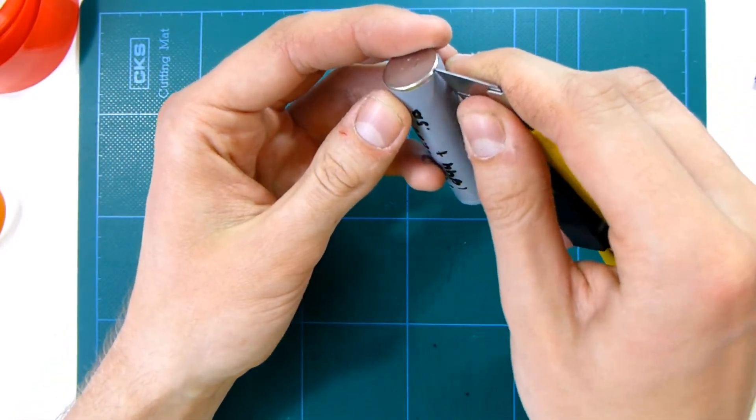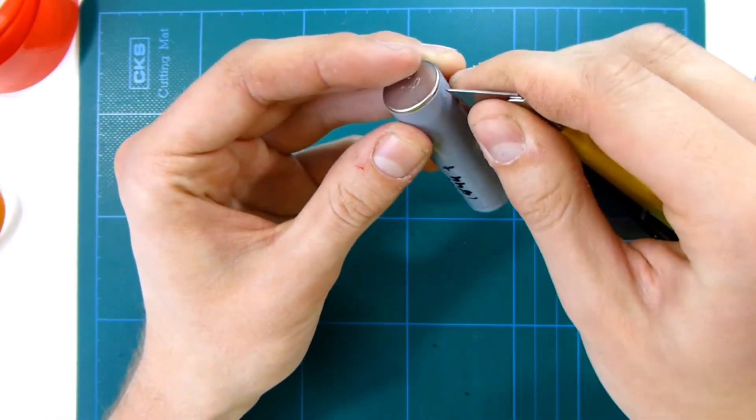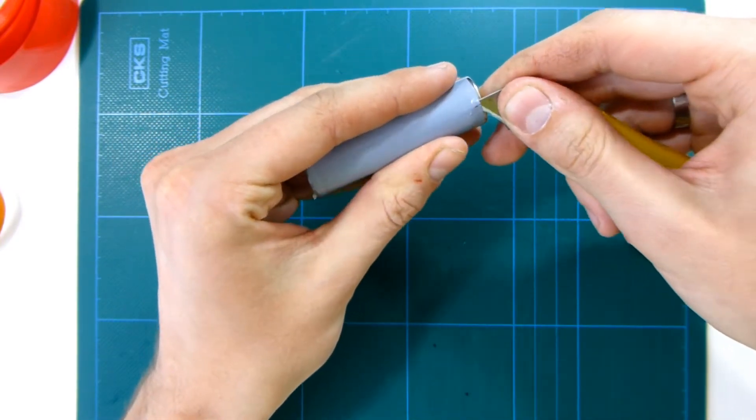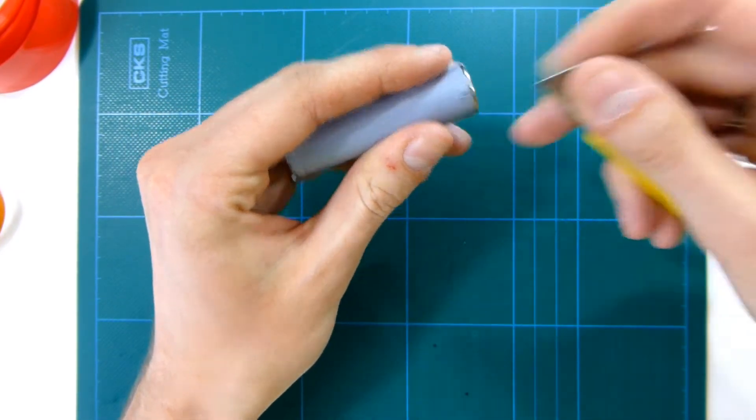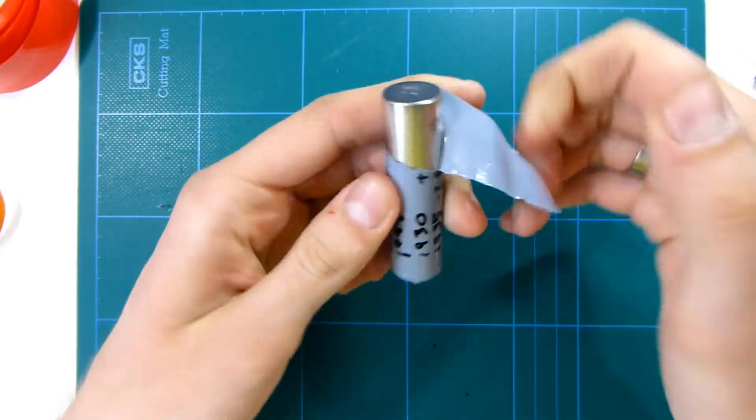Just make a score so you can get your knife or whatever tool in between here. Don't cut too hard, you just want to go through the wrapping and then just tear it off.